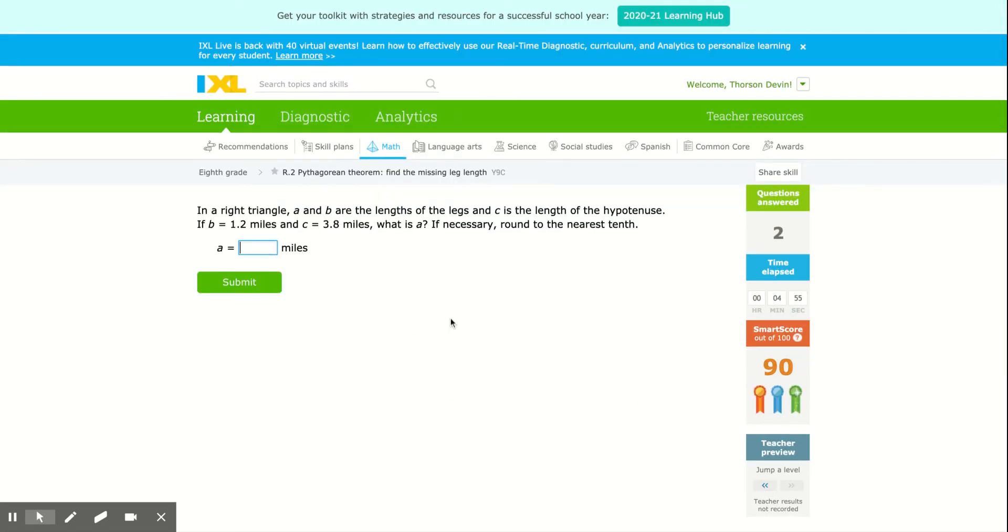Oh, here's one where they just give you words. So again, what I would do is I'd draw my right triangle, draw the little right angle in there. In a right triangle, A and B are the lengths of the legs. So they're saying that this is a leg and this is a leg.